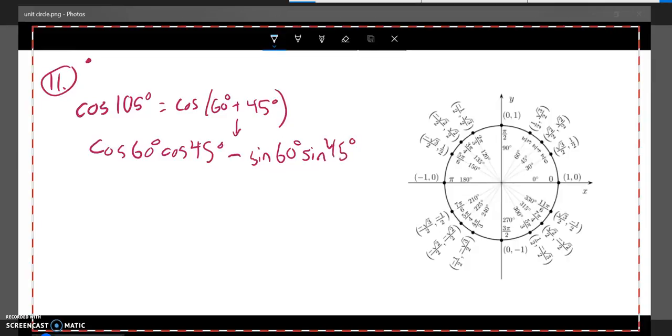And then I can look up those values. Let's see. 60 degrees is here. So cosine of 60 degrees is 1 half. 45 degrees is here. Cosine of 45 degrees is root 2 over 2.